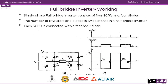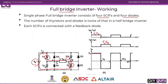Now we will see the working of the full bridge inverter. In the full bridge inverter we will be using four thyristors and four feedback diodes. Thyristors T1 and T2 are triggered together, and thyristors T3 and T4 are triggered together. When T1 and T2 are turned on, current from the supply flows through the positive of the load.